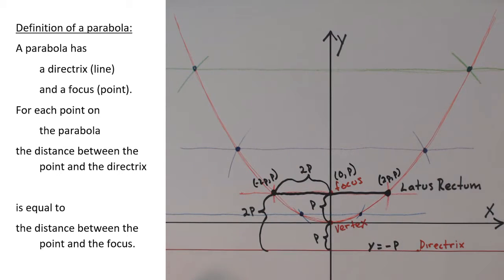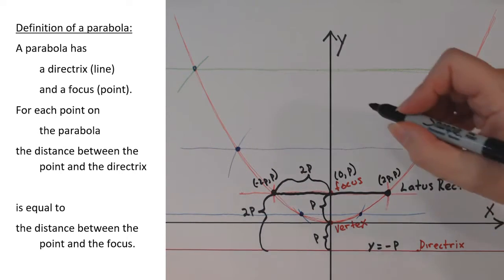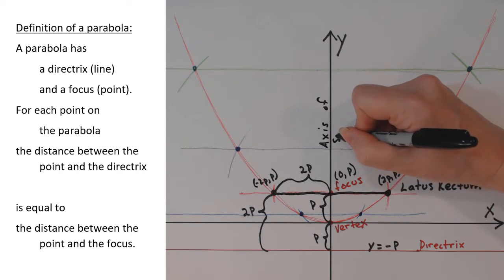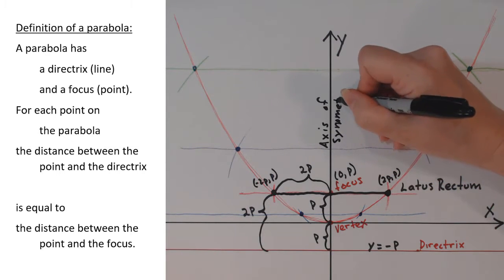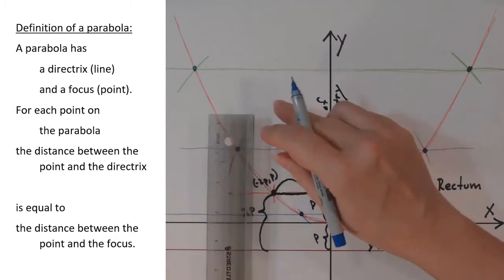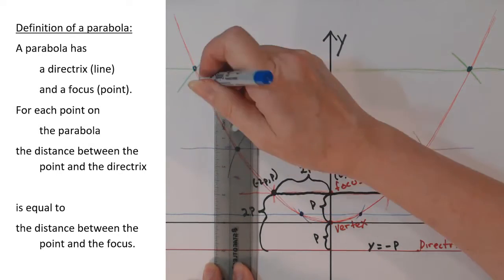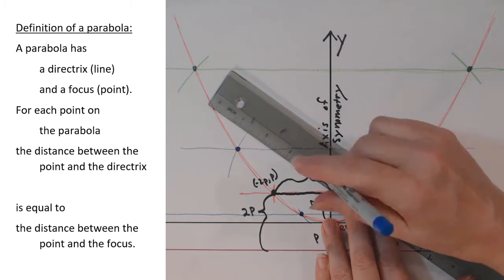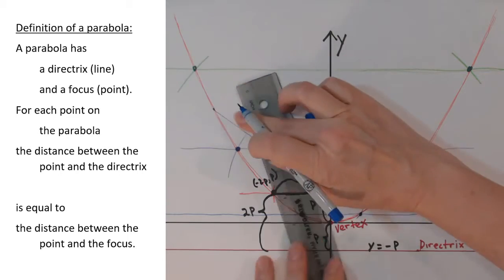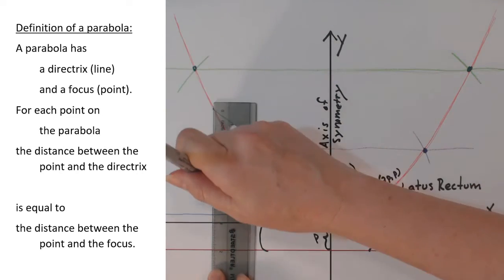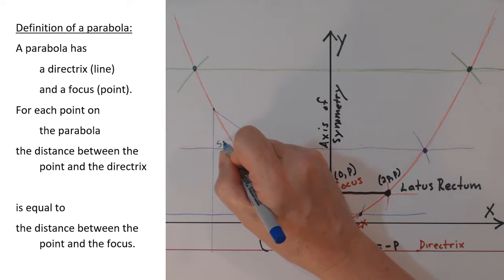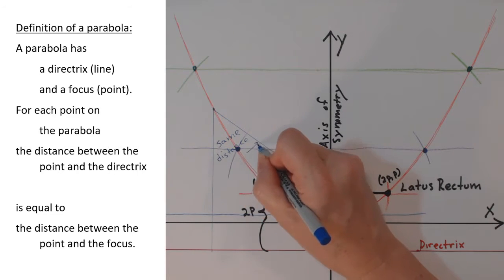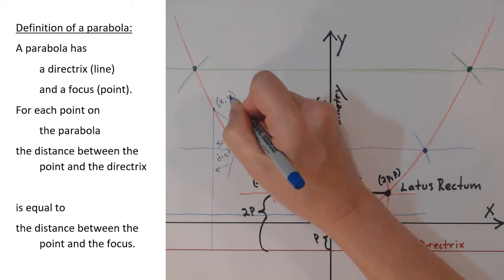Notice the parabola is symmetric about the y-axis. If you fold the paper on the y-axis, one side of the parabola will line up perfectly with the other side — the y-axis is the axis of symmetry for this parabola. We can find any arbitrary point on this parabola. Taking one 5 inches up from the directrix, we discover it is exactly that same distance — 5 inches — away from the focus. No matter what point you look at on the parabola, the distance between that point and the directrix is always the same as the distance between that point and the focus. That's true for any point (x, y) anywhere on the parabola.